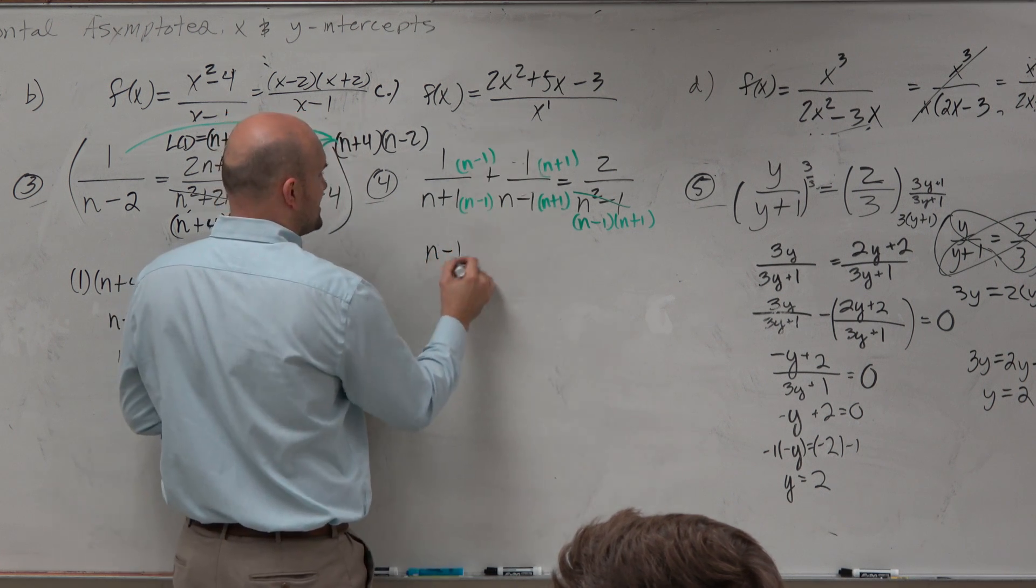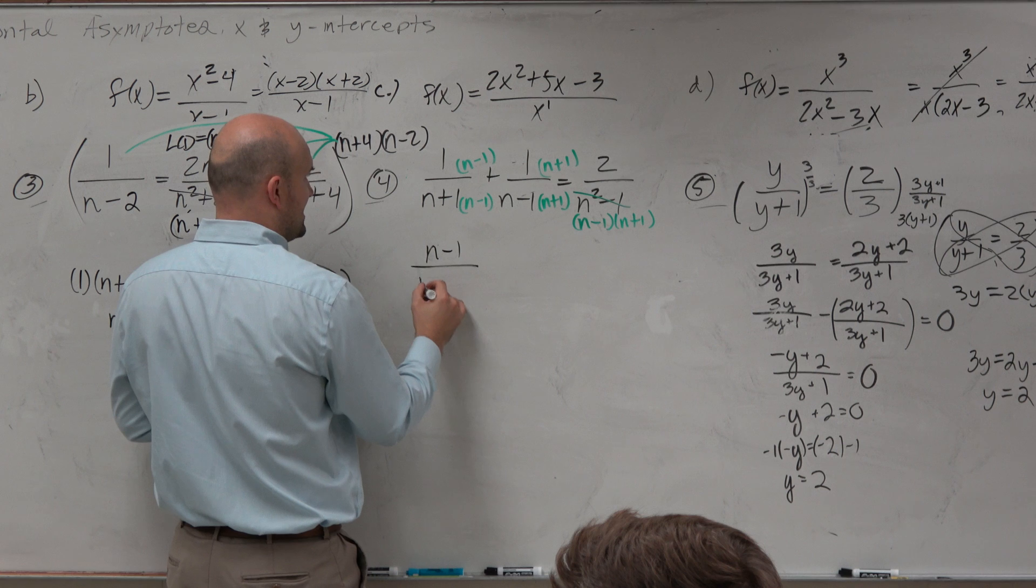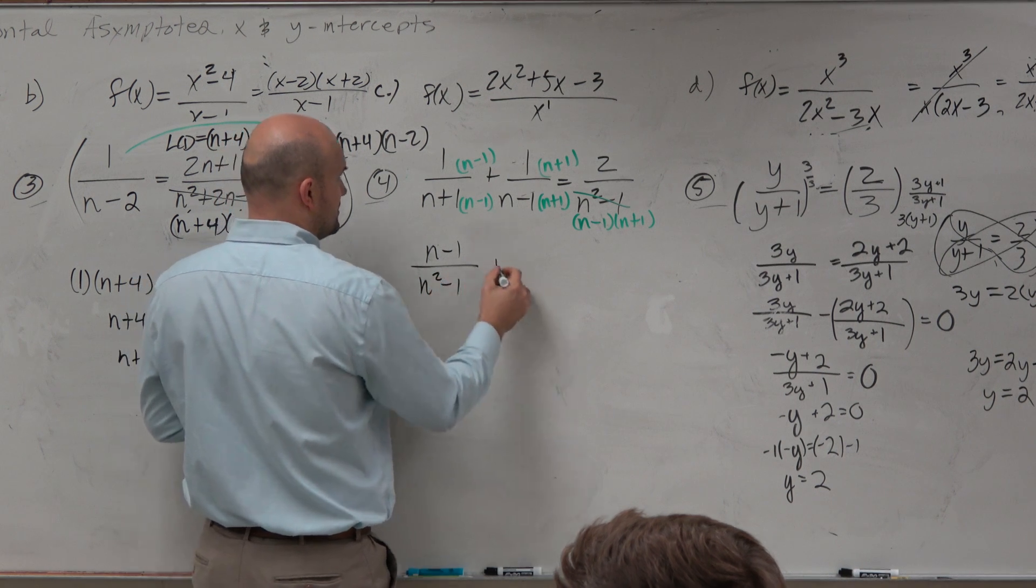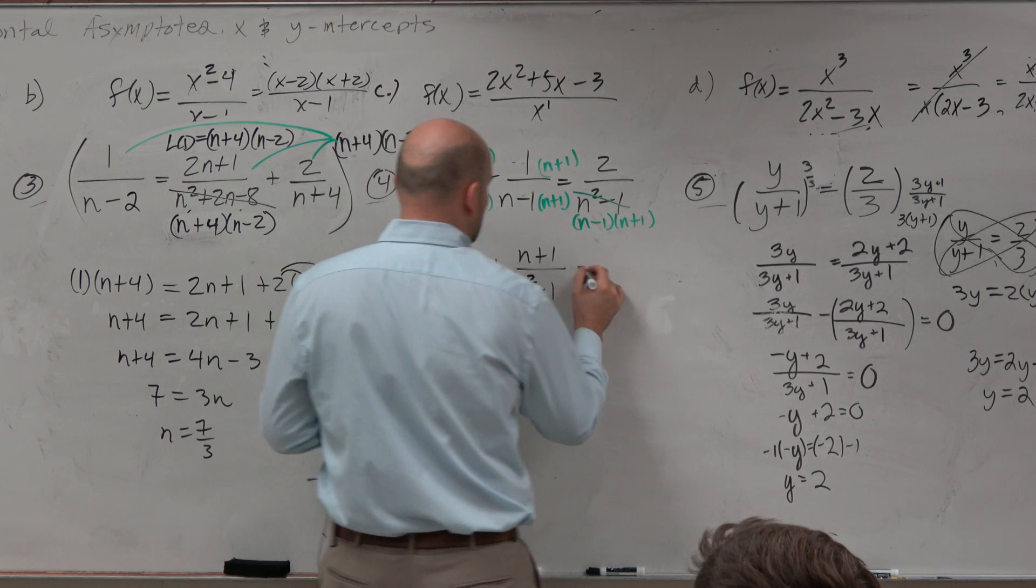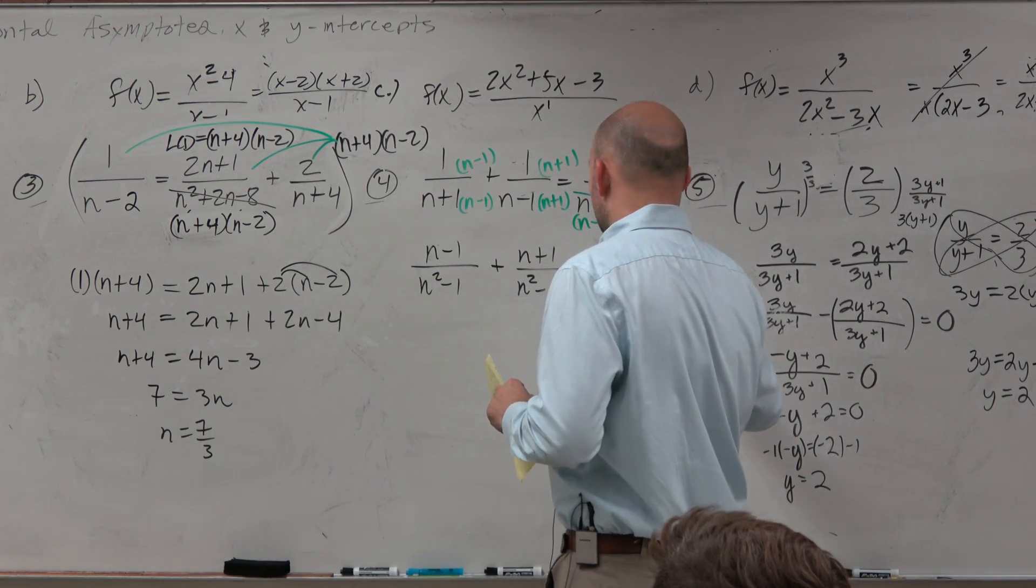Therefore, I have n minus 1 over my common denominator, which is n squared minus 1 plus n plus 1 over n squared minus 1 equals 2 over n squared minus 1.